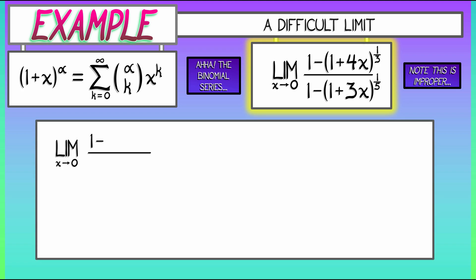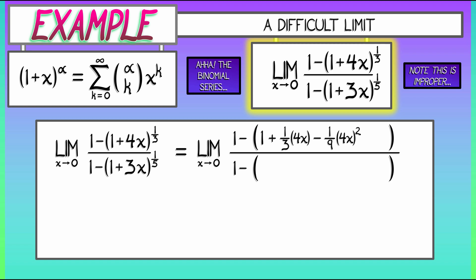Writing out what happens in the numerator, we have 1 minus quantity 1, and then the next term in the binomial series is one-third times quantity 4x. The next term is one-third times negative two-thirds, all divided by two factorial. That's negative one-ninth times quantity 4x squared, and then there's all those other terms.